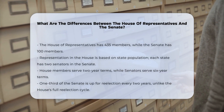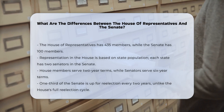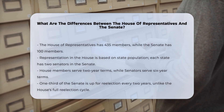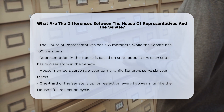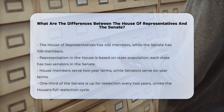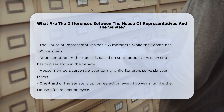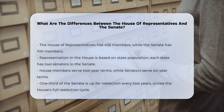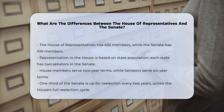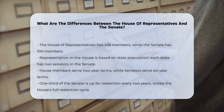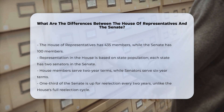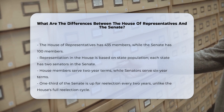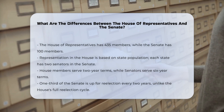Representation and population. The House of Representatives and the Senate differ significantly in how they represent the population. The House has 435 members, with each state's number of representatives determined by its population. In contrast, the Senate has 100 members, with each state having two senators, regardless of its population.